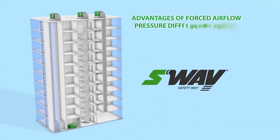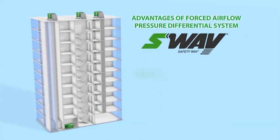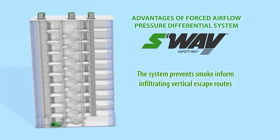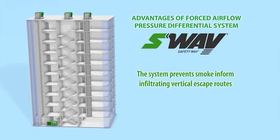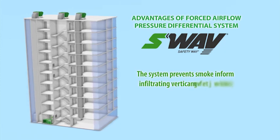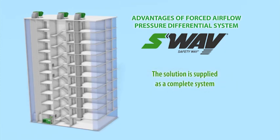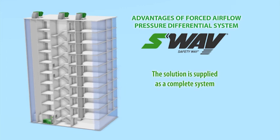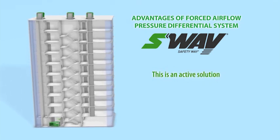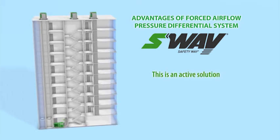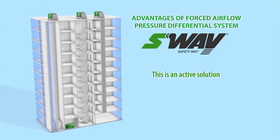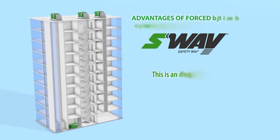Safety way system advantages: the system prevents smoke from infiltrating vertical escape routes in the event of a fire in residential, office and industrial buildings, regardless of how tall they are, the time of year, temperature differences, or wind forces. The solution is supplied as a complete system optimized for use in a given building. This is an active solution, allowing for simple adjustments of settings, monitoring of current operational parameters, as well as automatic adjustment to rapidly changing parameters such as air temperature or wind.